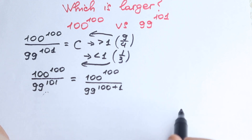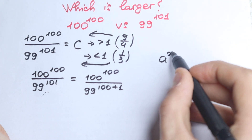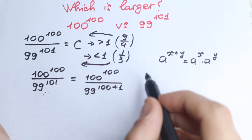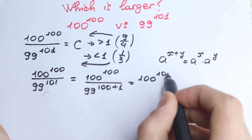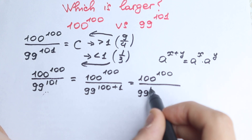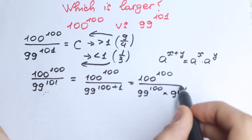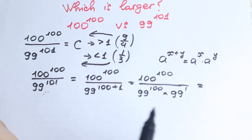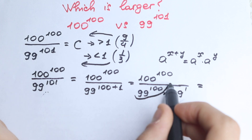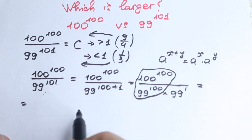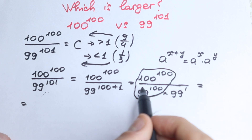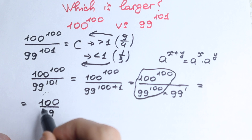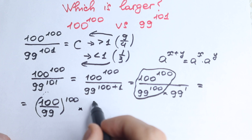Now we need a really important rule: if we have a to the power (x plus y), we can write it as a to the power x times a to the power y. Let's apply this rule: we have 100 to the power 100 in the numerator, and in the denominator 99 to the power 100 times 99 to the first power. Now grouping elements with the same power, we can write the fraction as (100 over 99) to the power 100, times 1 over 99.